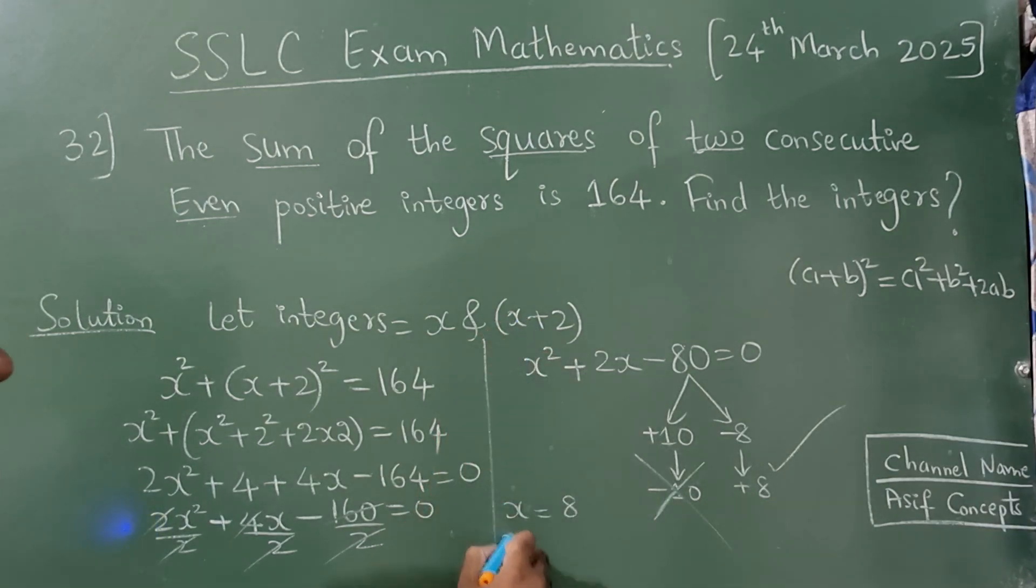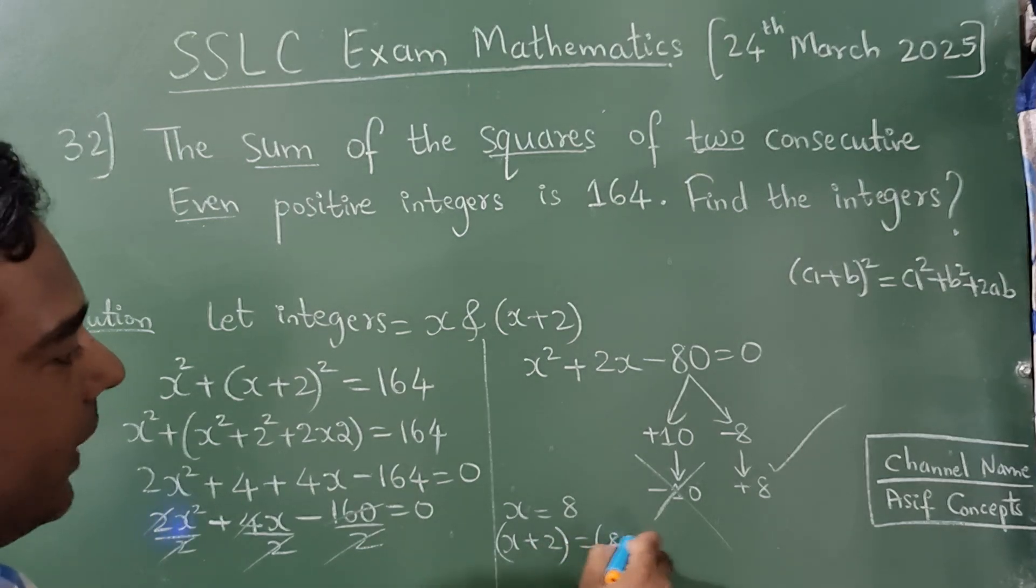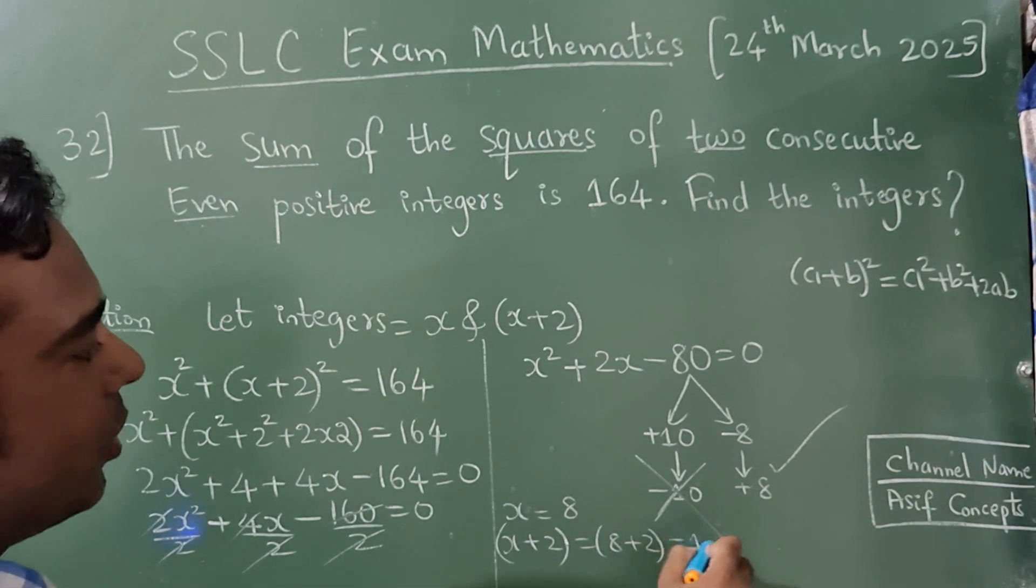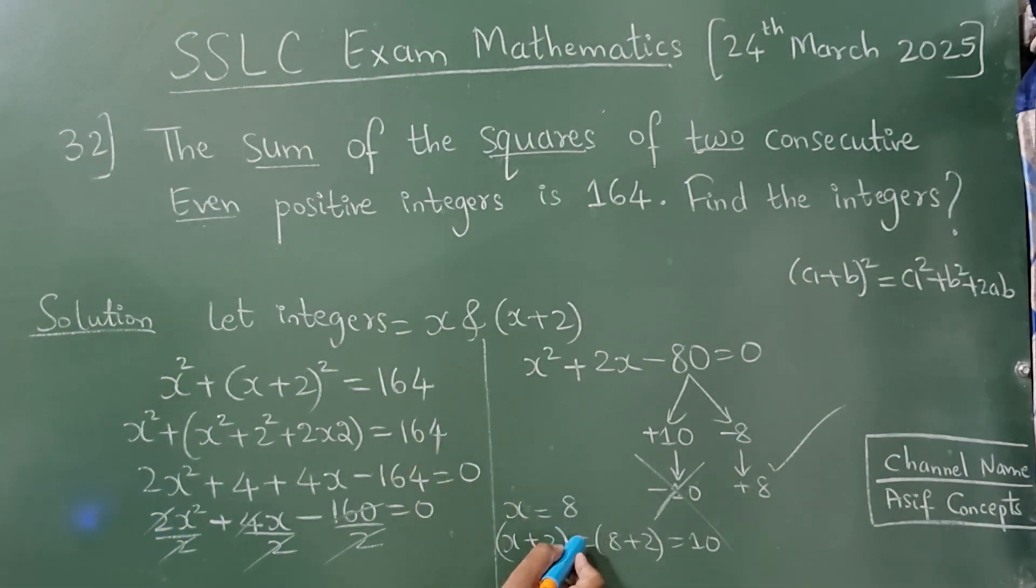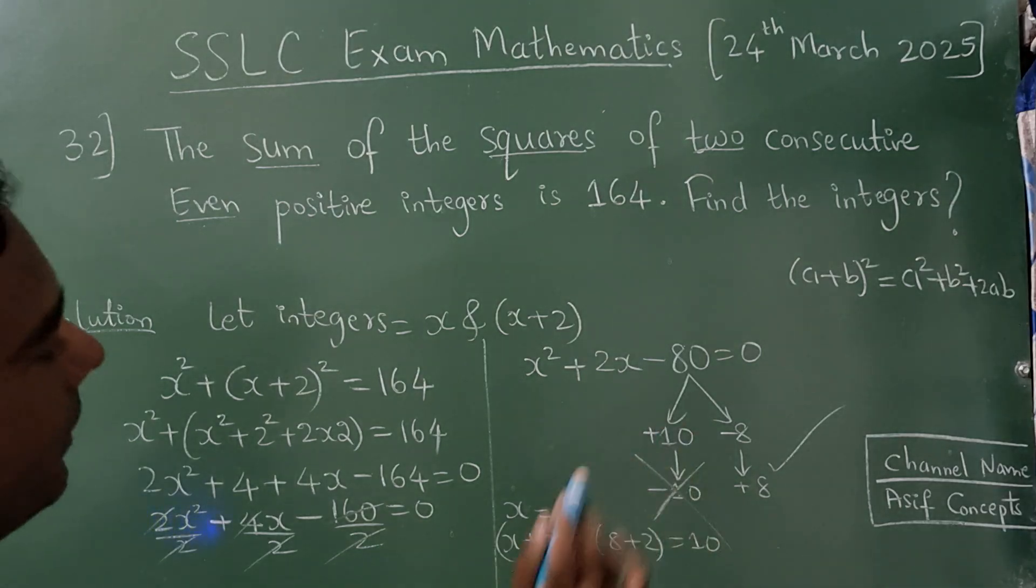So what is your answer? x is equal to 8, and one more is x plus 2. So 8 plus 2 is equal to 10. So the two integers are 8 and 10.